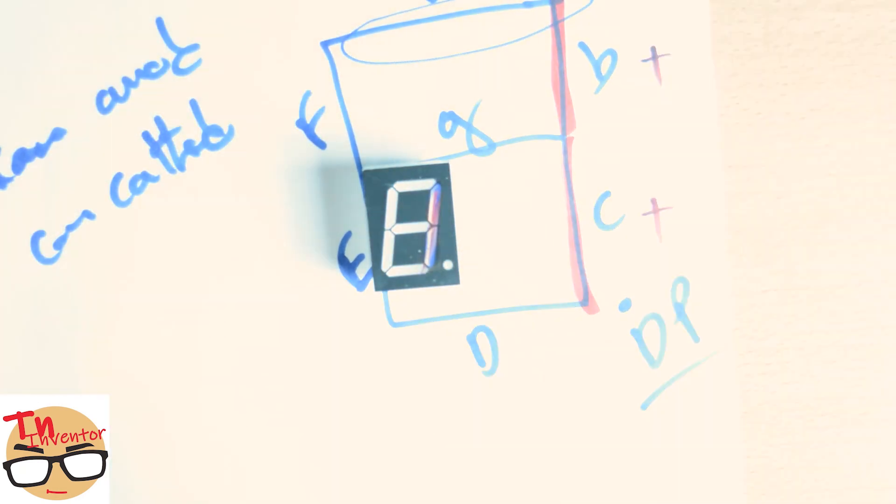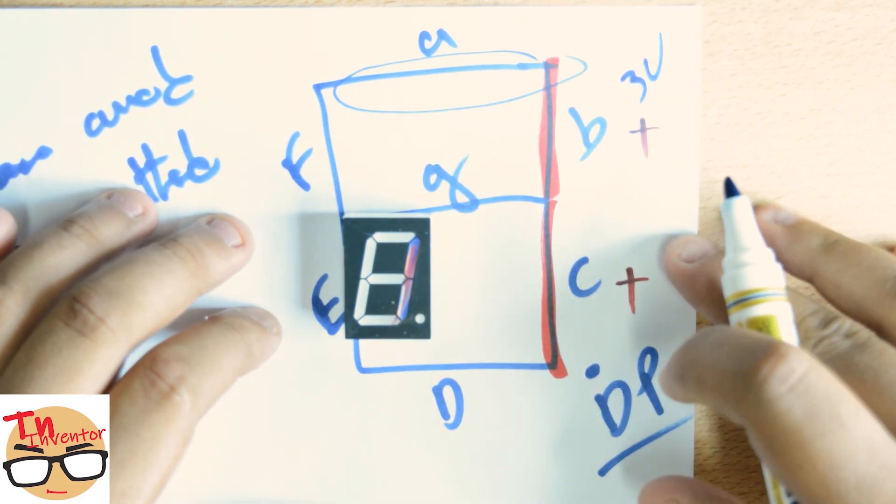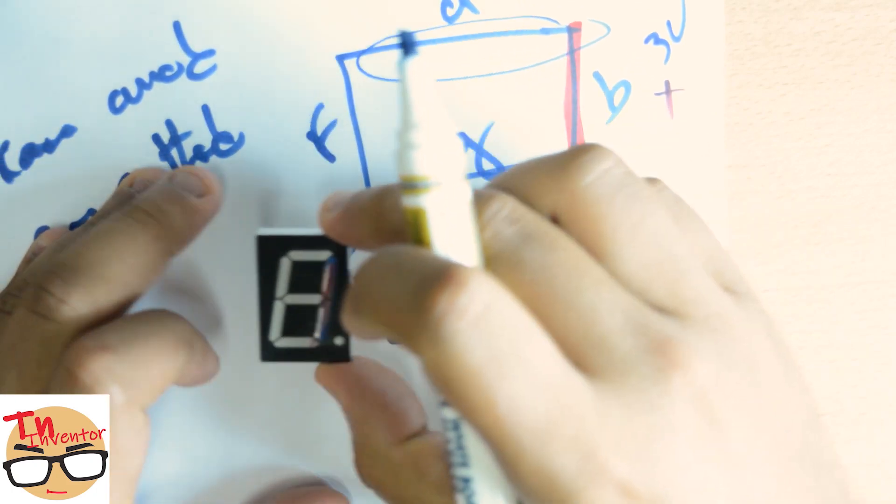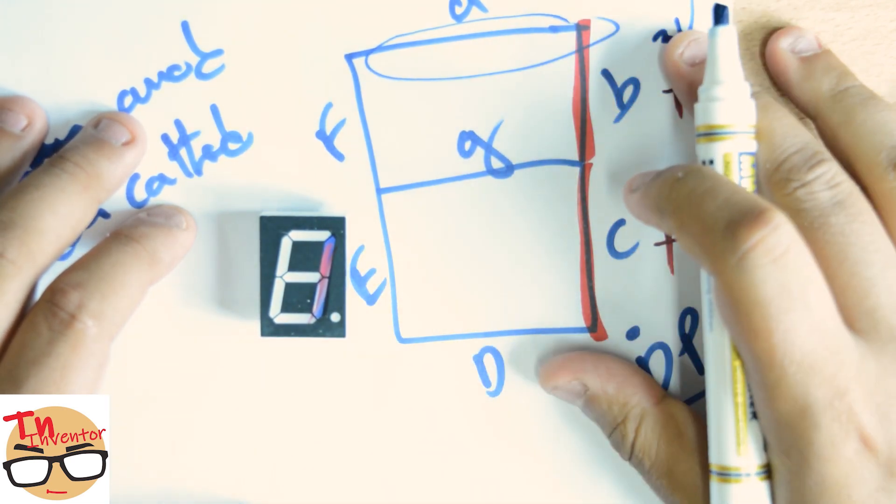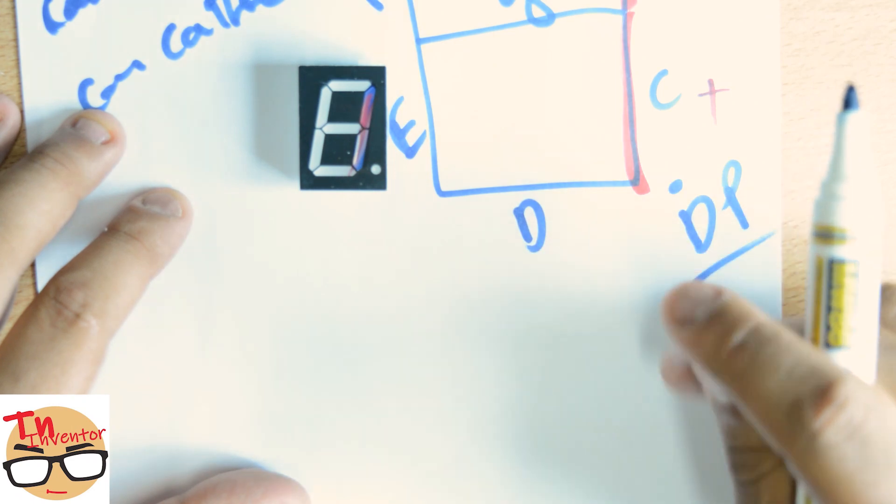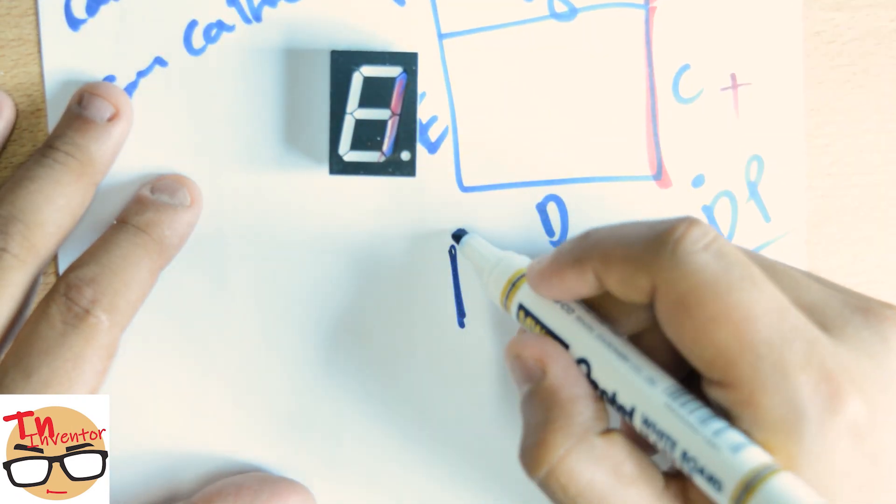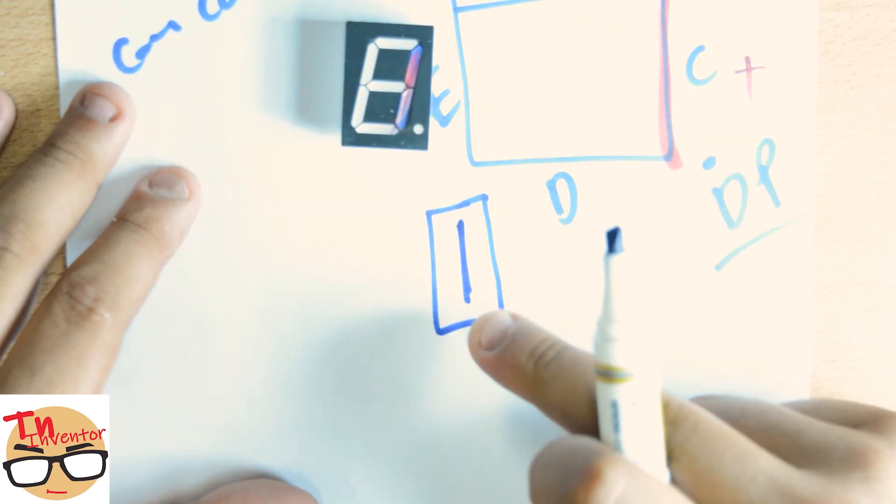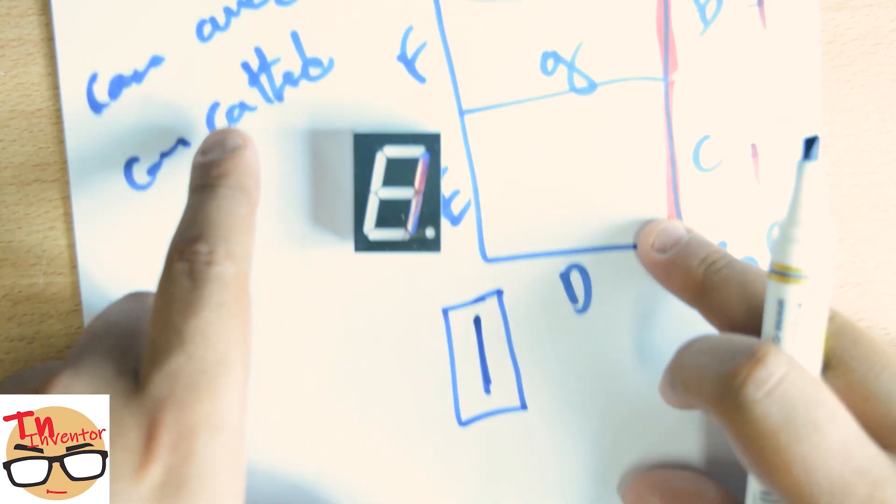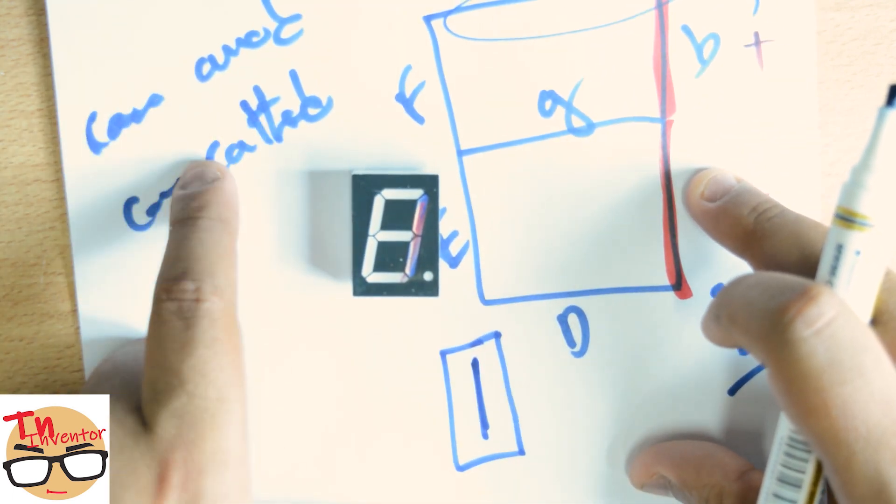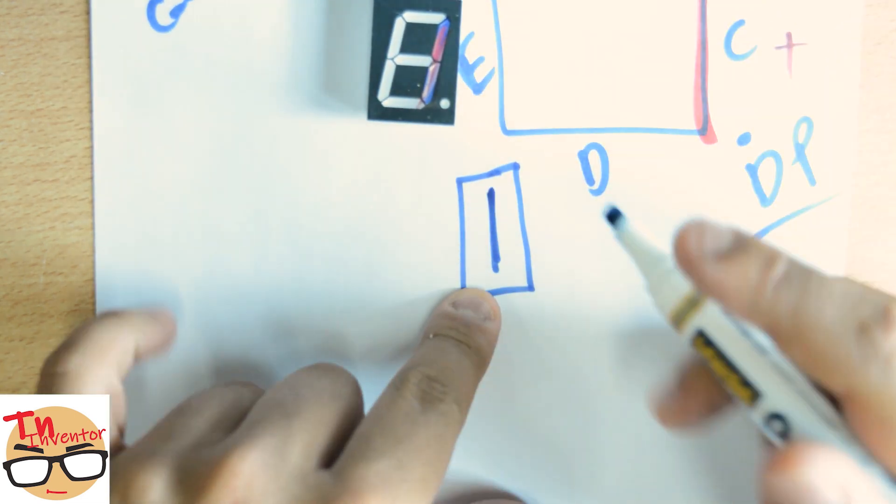For this video, let's say high means 3 volts. To light up number one, I'll put 3 volts on B, 3 volts on C, and to close the circuit we need to put a pin to ground. Every seven-segment display has one pin that should be either plus or minus. With common cathode, all cathodes are connected together, so we need to set this pin to ground.